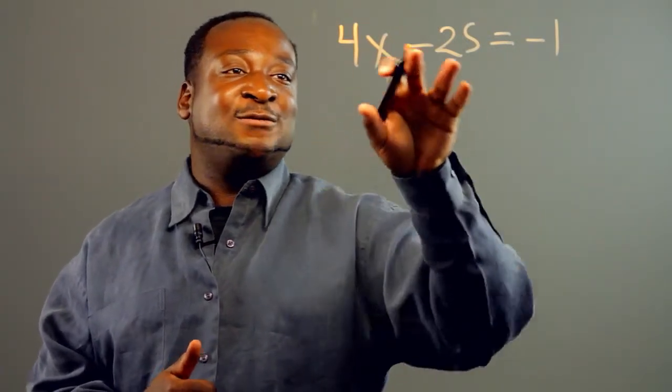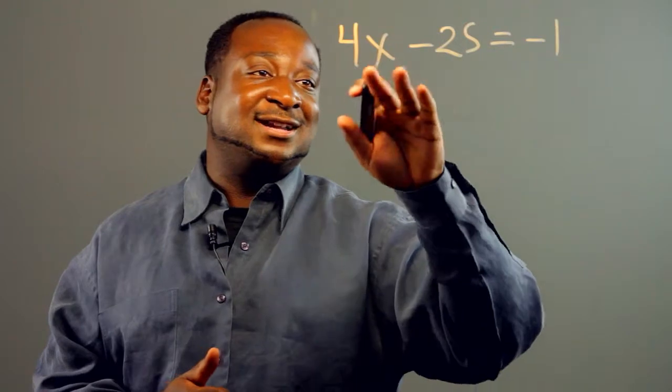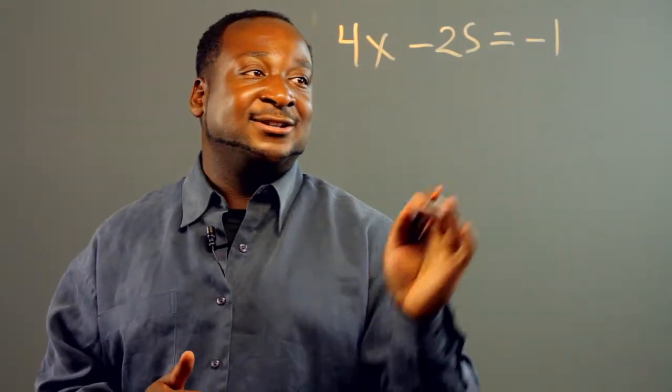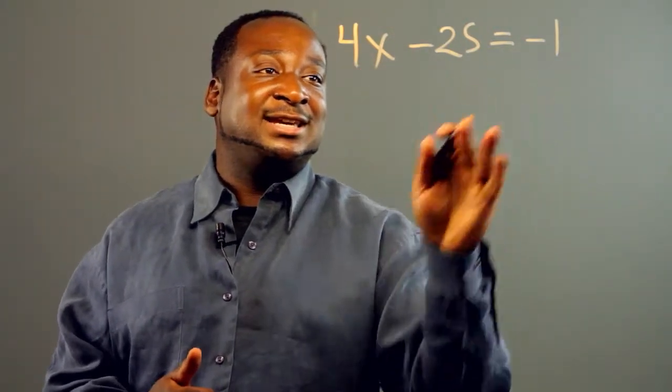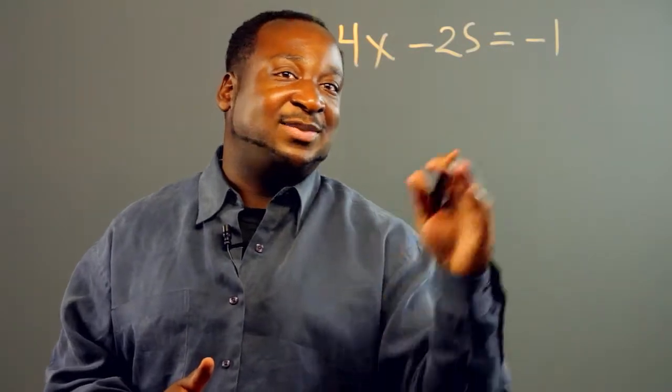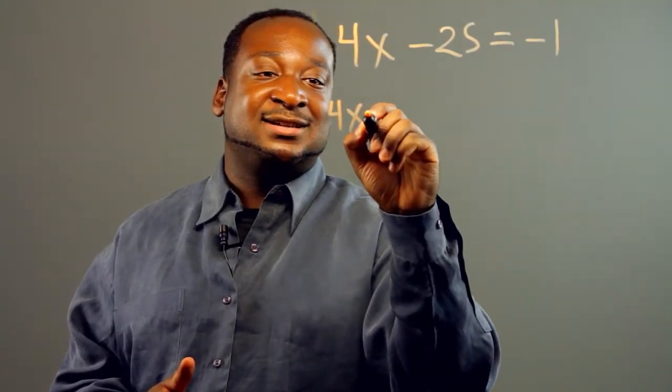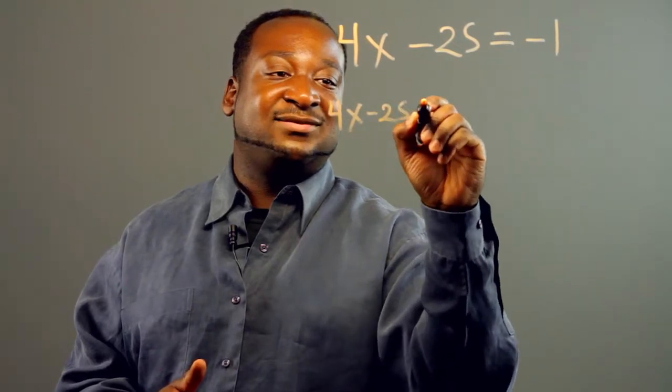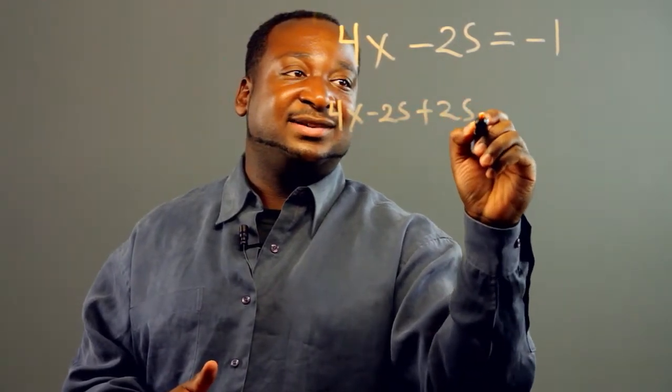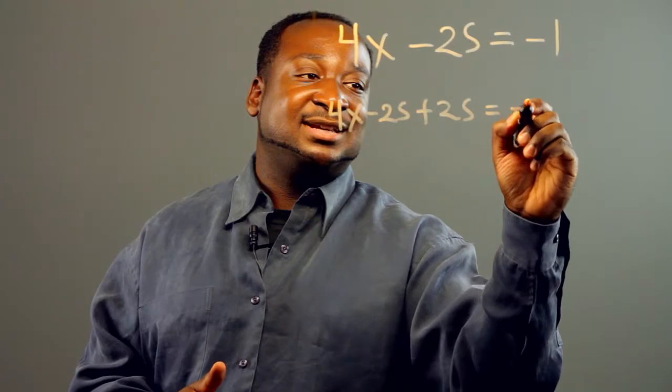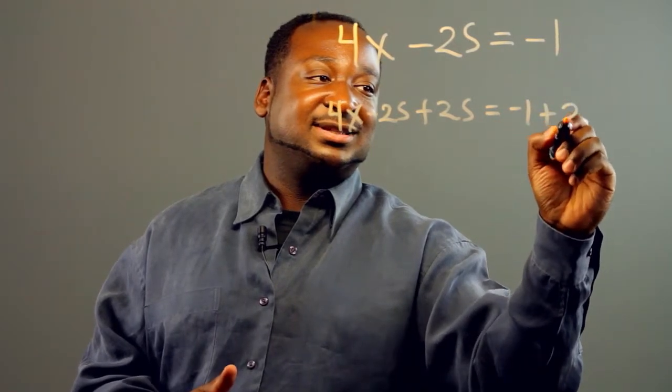We always want to get x, our unknown, the thing we're solving for. So in this case, we can add both sides by 25. So we get 4x minus 25 plus 25 equals negative 1 plus 25.